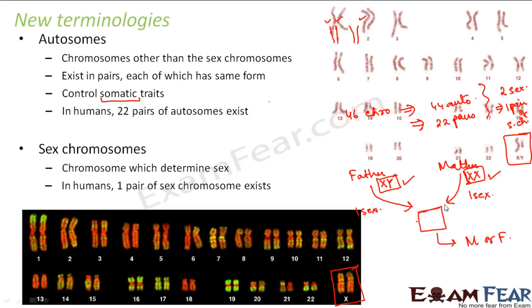During reproduction, the mother will always contribute one X, because she has two X chromosomes. But the father has the option to contribute either X or Y. Depending on what the father contributes, the sex of the child is determined. If the father contributes X, the pair becomes XX — a female. If the father contributes Y, it becomes XY — a male. So whether the child will be a boy or a girl is always determined by the father.